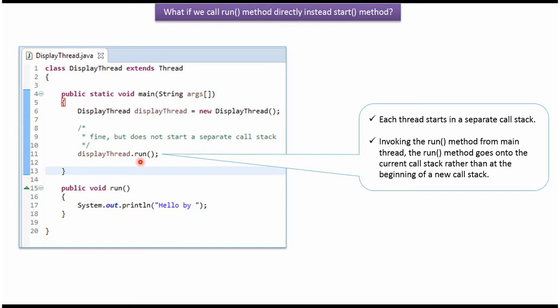Each thread starts in a separate call stack. If we invoke the run method from the main thread, then the run method goes onto the current call stack rather than at the beginning of a new call stack.